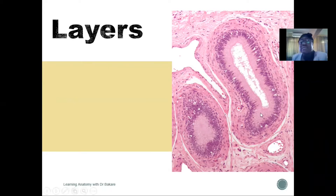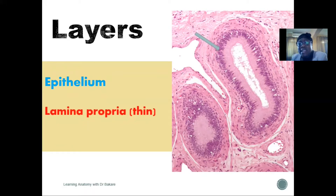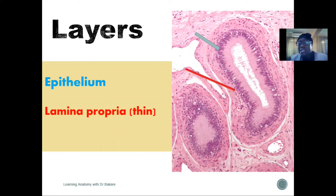If you look at it, you see rounded arrangements, and this represents the tubular foldings of the epididymis. The layers of the epididymis are made up of the epithelium — the epithelium is the innermost layer, and this is the layer that forms contact with the lumen. This is the central lumen of the epididymis, and this is the epithelium lining. The second layer where the epithelium lies over is the lamina propria, which is a thin layer creating a platform onto which the epithelium stands.